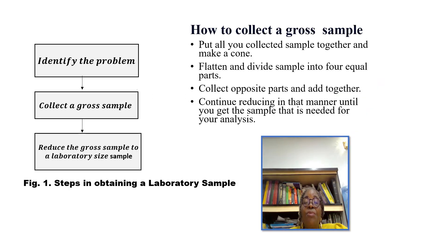How do we collect a gross sample? For a gross sample, we identify the problem, we collect a gross sample by reducing the gross sample to a laboratory-sized sample. How do you reduce it? You put all your collected samples together and make a cone. You flatten and divide samples into four equal parts and you collect opposite sides and add together. You continue that division until you have a smaller sample that you can call a representative sample that is useful for your laboratory analysis. It's a difficult process, but every student must learn it.